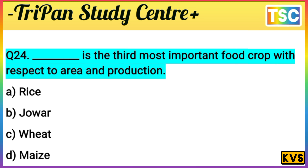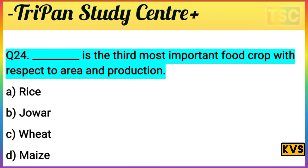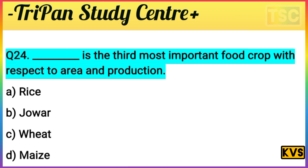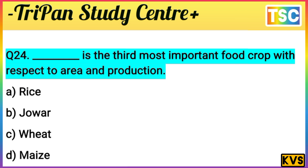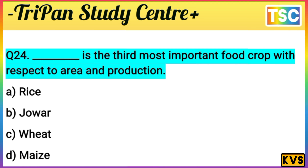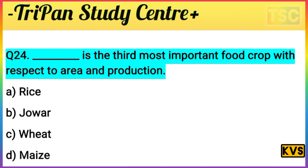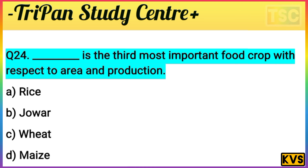Next question on your screen: Dash is the third most important food crop with respect to area of production. Option A: Rice. Option B: Jowar. Option C: Wheat. Option D: Maize. Test your knowledge — I give you a few seconds.